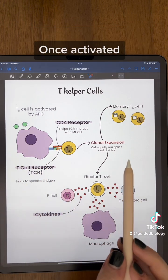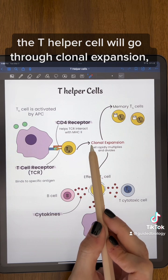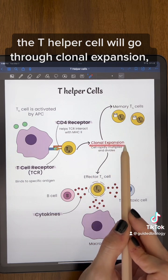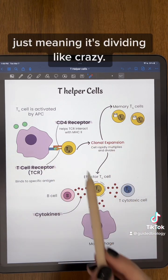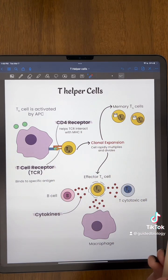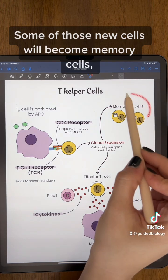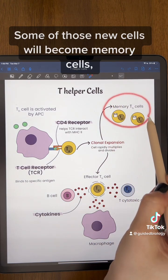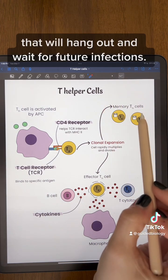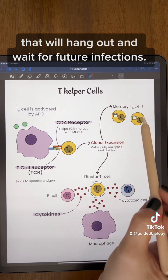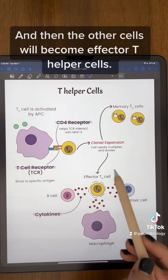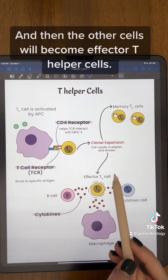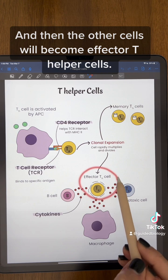Once activated, the T helper cell will go through clonal expansion, meaning it's dividing like crazy. Some of those new cells will become memory cells that will hang out and wait for future infections, and the other cells will become effector T helper cells.